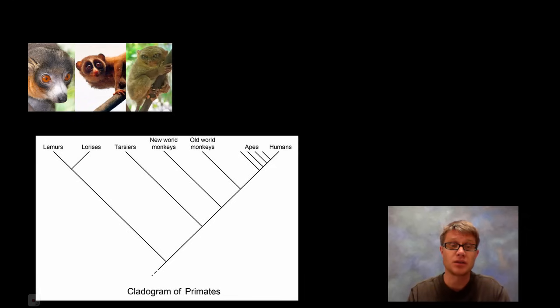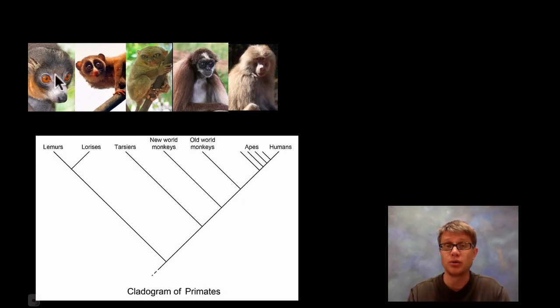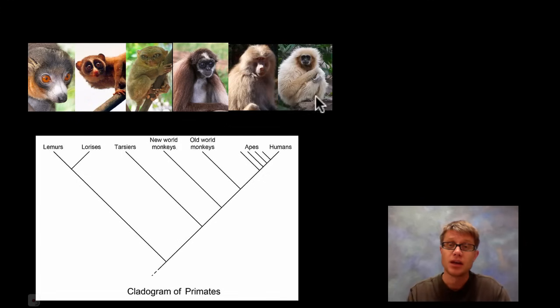New world is a South American monkey. An example could be the squirrel monkey. An old world monkey would be like a baboon. All of these things have tails. And now we move up to the apes. The first one would be the gibbon. That would be this first branch point. Then we have the orangutan, the gorilla,